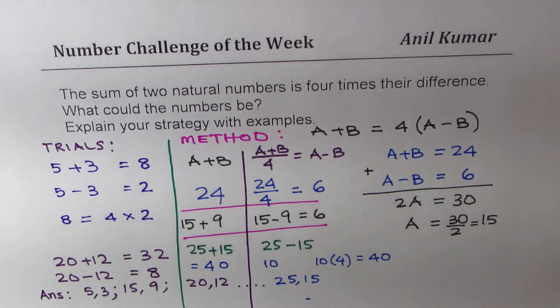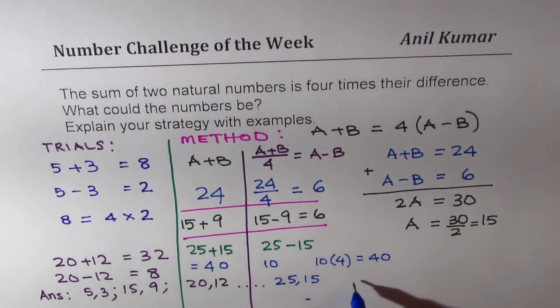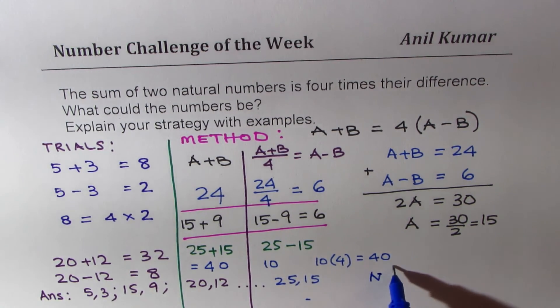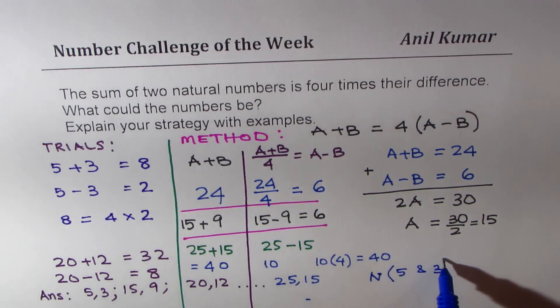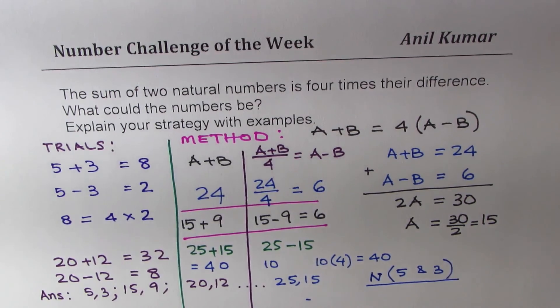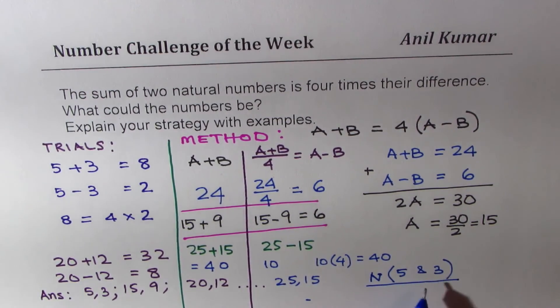What we find is that all multiples—let's say n is a number—all multiples of 5 and 3 will be our solution. Any multiple of 5 and 3 will be a solution for us. So that becomes a general solution for the given condition. That is how our senior students can do and derive a formula.